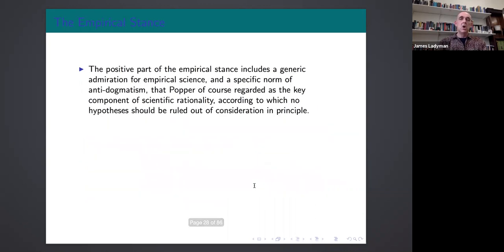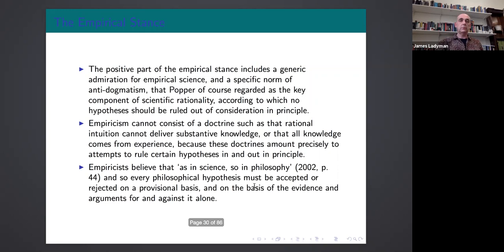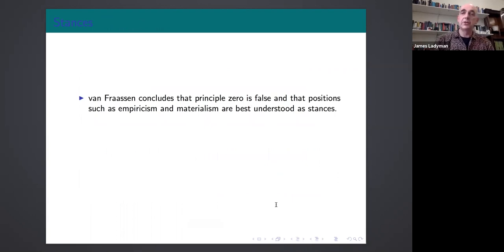So this is why Van Fraassen thinks we have to have stances. What's the empirical stance? Well according to him it's generic admiration for empirical science and a specific norm of anti-dogmatism, which of course Nancy was endorsing yesterday. I think many of us would say, notwithstanding the problems with Karl Popper's falsificationism, he was absolutely right to stress fallibilism as important to the nature of science. So empiricism can't consist according to Van Fraassen of a doctrine such as that rational intuition cannot deliver substantive knowledge or that all knowledge comes from experience, because these doctrines are precisely attempts to rule out certain hypotheses. Empiricists believe that as in science so in philosophy, so every philosophical hypothesis ought to also be accepted or rejected on a provisional basis on the basis of evidence and arguments for and against it alone. So Van Fraassen concludes that principle zero is false and that positions such as empiricism and materialism are best understood as stances.